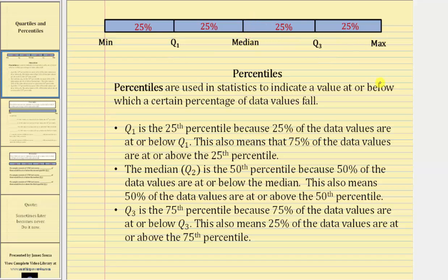Quartile three, or Q3, is the 75th percentile because 75% of the data values are at or below Q3, which also means 25% of the data values are at or above the 75th percentile.